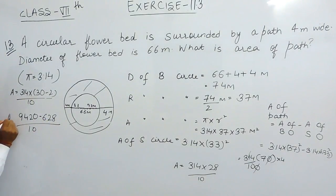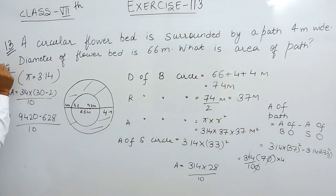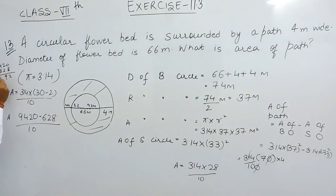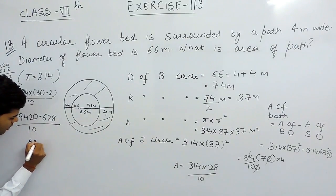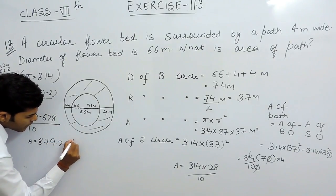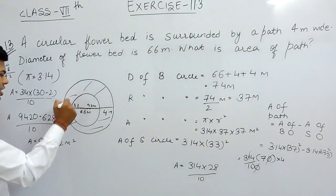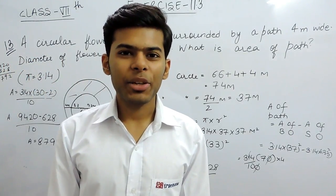We subtract to get 9420 minus 628, which equals 8792, divided by 10. That gives 879.2 meters squared. So 879.2 m² is the area of the shaded path portion. This is how we solve this question. Thank you.